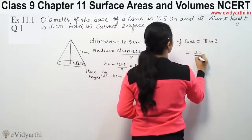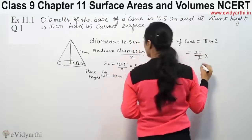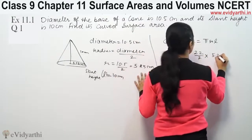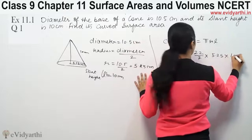The value of π we are using is 22 by 7. Radius is 5.25 cm and L is 10 cm.